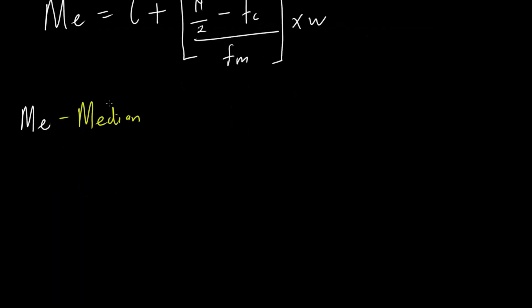We have L, which is the lower boundary of the class containing the median. When studying grouped frequency distribution, there are some terms we are used to, which include the class boundary and the class width. So L is the lower class boundary of the class containing the median.